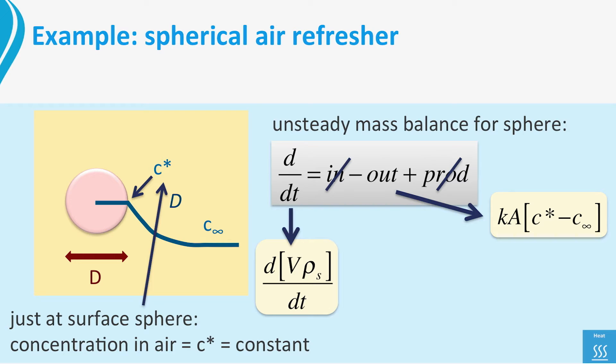Aha, a driving force, thus a flow. That we can model as mass transfer coefficient k times sphere area A times the driving force delta C.